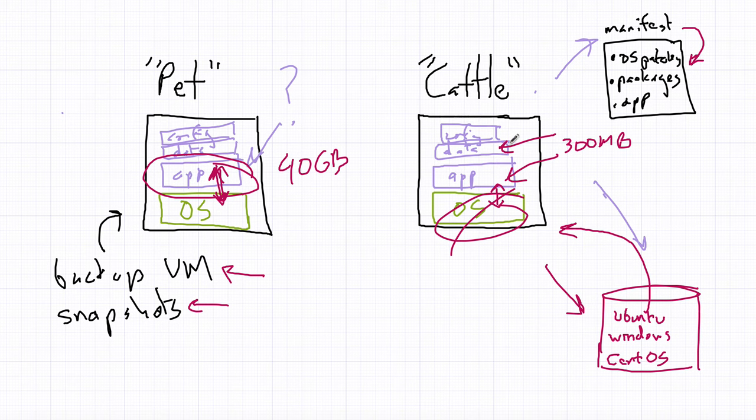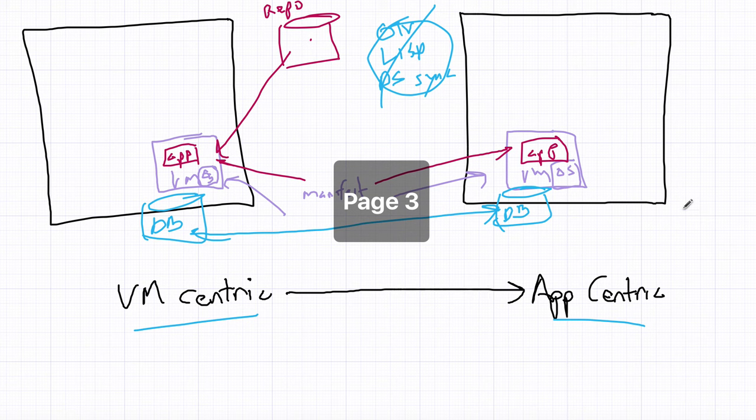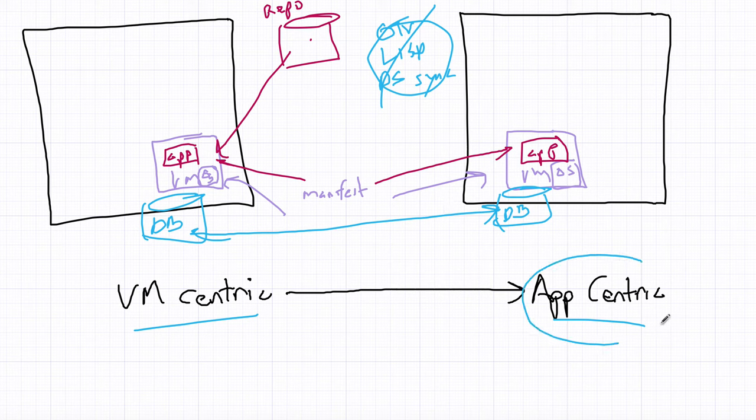So we're moving from a VM-centric world into an app-centric world. Because if you think about it, again, this is what we care about. We care about the application and the data. We don't care about the OS. The OS is just there because the application needs it to access primitives such as network, storage, and compute. There's no real reason to move a virtual machine from one data center to another or from one cloud to another. So we're moving to a more application-centric world.